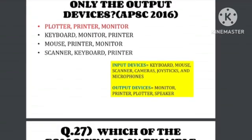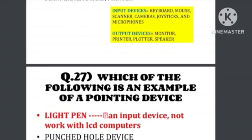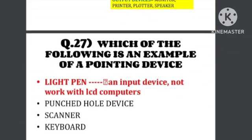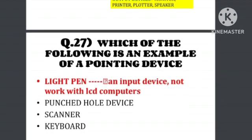Question number 27: Which of the following is an example of a pointing device? The options are light pen, punched hole device, scanner, and keyboard. The answer is light pen. Light pen is a pointing device. It is generally not used in normal or general computers — engineers and architects use the light pen with LCD computers.